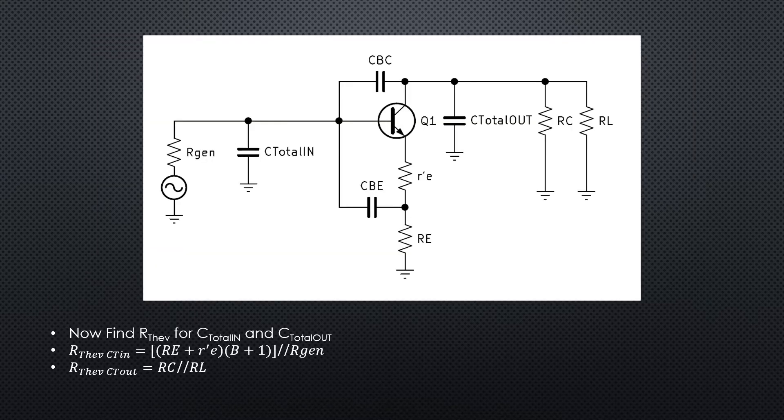Here we've added up all our input capacitances and output capacitances, giving us C total in and C total out. Now we can thevenize from those two capacitors and find an R thevenin C total in and an R thevenin C total out.